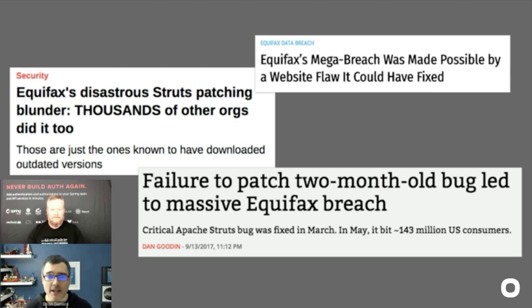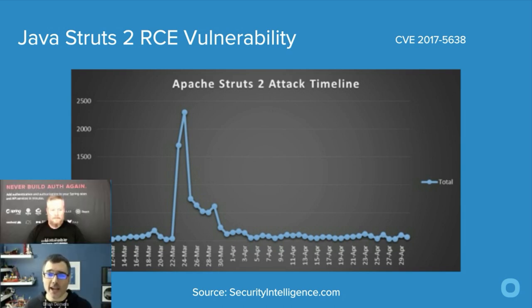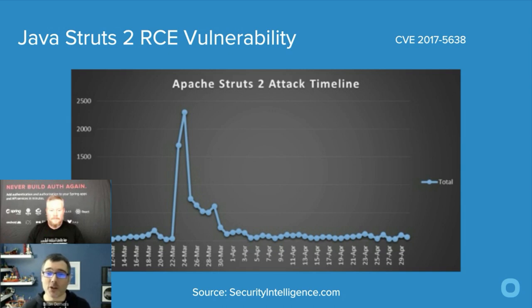Here's a timeline of the CVE. On March 10th, the official CVE notice went out — that's when the world found out there was a problem. Less than two weeks later, there's a giant spike in attacks. That's really your window: less than two weeks. We need to be able to find issues and update our application within two weeks, obviously sooner when possible.